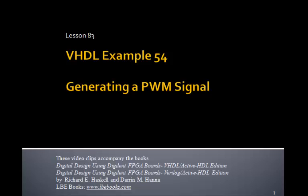This is lesson 83, VHDL example 54. In this example, we'll write a VHDL program to generate a PWM signal that we can use to control the speed of a DC motor.